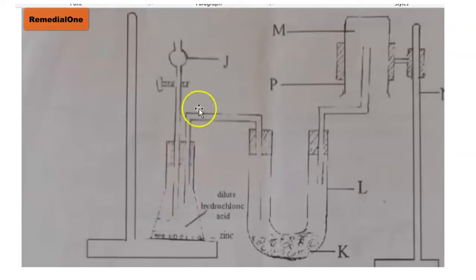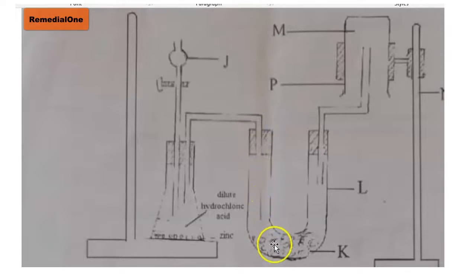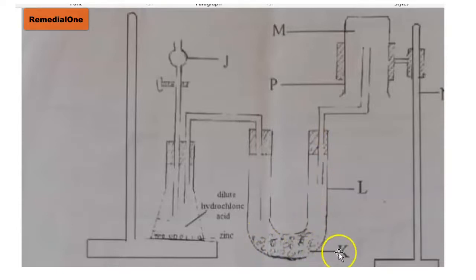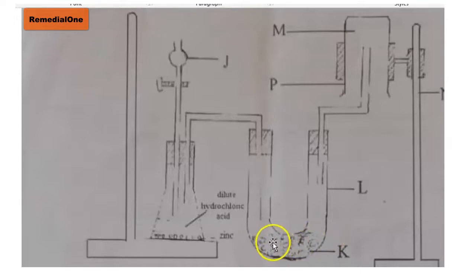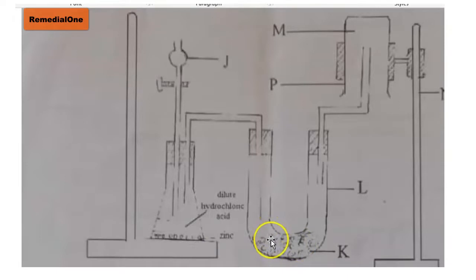The gas is produced and passes through the delivery tube into a U-tube or U-shaped glass tube. This U-shaped glass tube contains a drying agent. Normally for hydrogen gas, the drying agent is calcium chloride, because calcium chloride does not react with hydrogen gas. That is one condition for selecting a particular drying agent.